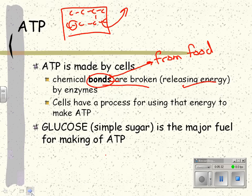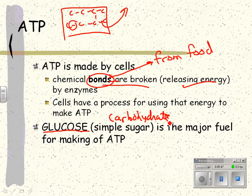The major fuel for making ATP is something called glucose. Glucose is a simple sugar, also known as a carbohydrate. You already know this. Carbohydrates are used for energy.